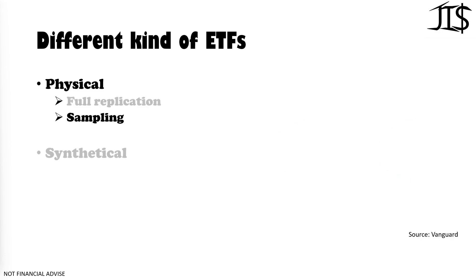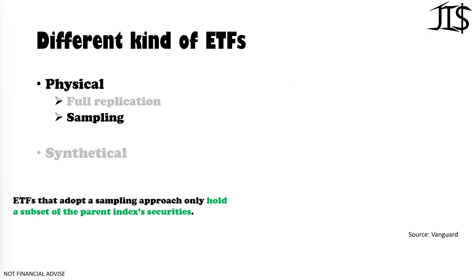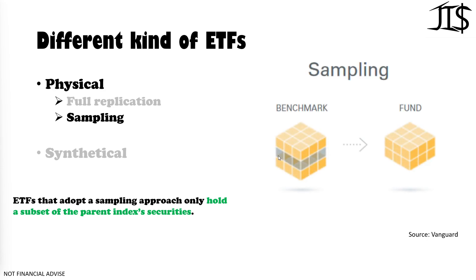Then you have the sampling ETFs. In contrast to fully replicated ones, here there is only a subset of the parent index securities included in the ETF. True sampling ETFs leave out a certain type of stocks — for example, ETFs that exclude REITs. The benchmark index includes the REITs but the fund excludes those REITs and takes the rest of the benchmark. This is mostly also mentioned in the name, such as 'excluding REITs' or 'EXL REITs'.